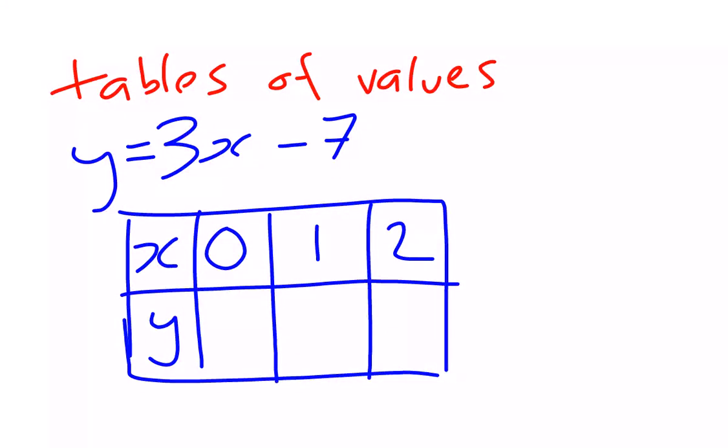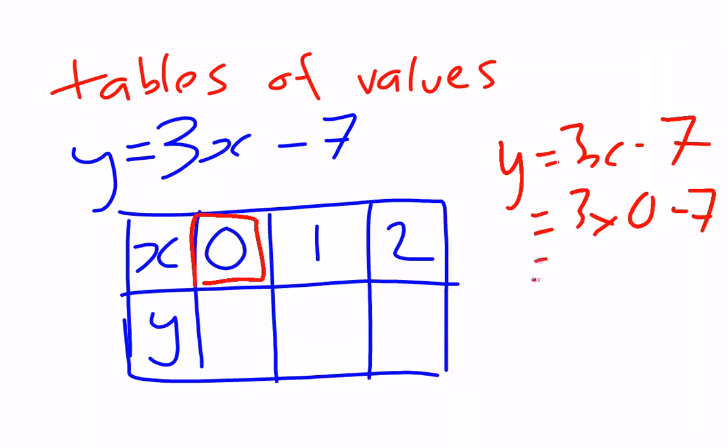To show an example for the first one, we have y equals 3x minus 7. We substitute in the value of 0 for x. 3 times 0 minus 7. 3 times 0 is, of course, 0, so we're left with y equals negative 7 if x was 0. We place it in the appropriate box. We don't always have to do this working, but it's there if we need.